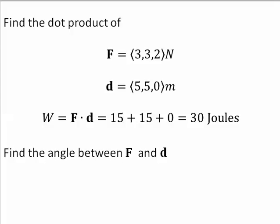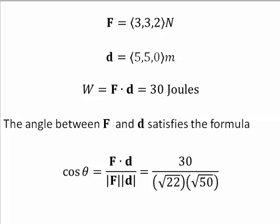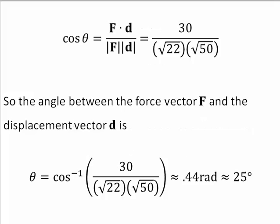What is the angle between f and d? The cosine of theta must equal the dot product of f with d, which is 30, divided by the product of the magnitude of f, which is radical 22, times the magnitude of d, which is radical 50. To find theta, we would use a calculator or some other software device. You do want to be careful in how you input that ratio — practice until you can correctly get 0.44 radians or 25 degrees.